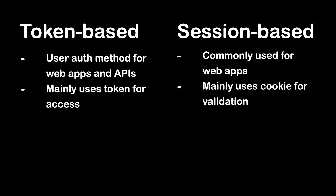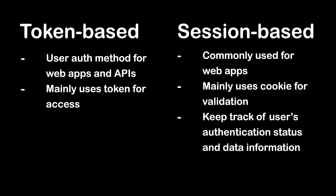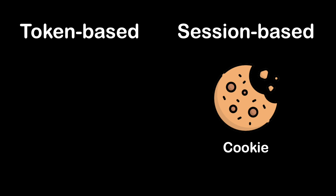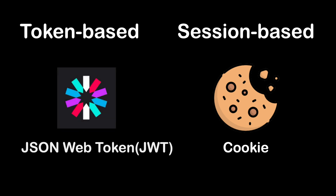Session-based authentication involves the use of server-side sessions to keep track of a user's authentication status and associate data as they interact with the application. So we know that one uses cookies and the other uses tokens — mainly JSON Web Token, or JWT. Both methods are mechanisms for handling user authentication and maintaining session state in applications, but they operate in different ways and have distinct use cases.